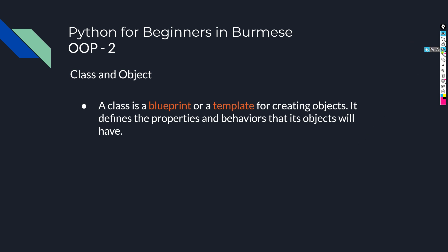A class is a blueprint — a blueprint or a template for creating objects. The objects have properties and behaviors that are defined within the class.